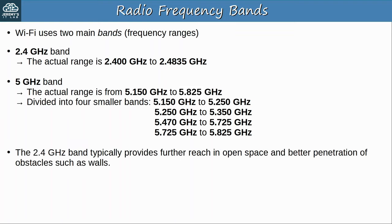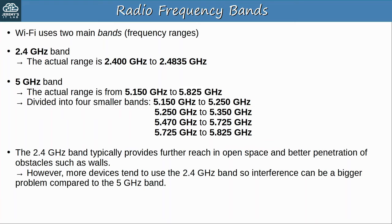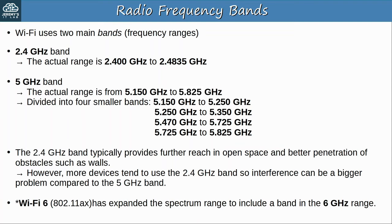The 2.4 GHz band typically provides further reach in open space and better penetration of obstacles such as walls. However, more devices tend to use the 2.4 GHz band, so interference can be a bigger problem compared to the 5 GHz band. Modern devices typically support both, and it's up to you which you want to use. Note that Wi-Fi 6, which is IEEE standard 802.11ax, has expanded the spectrum range to include a band in the 6 GHz range.